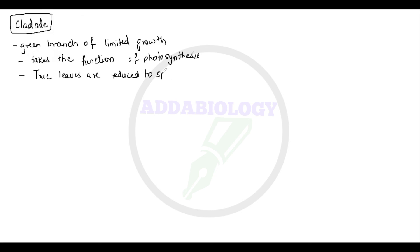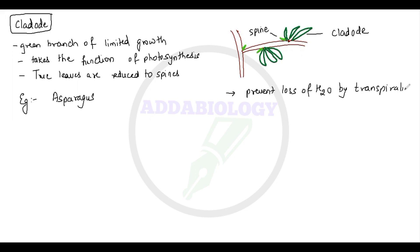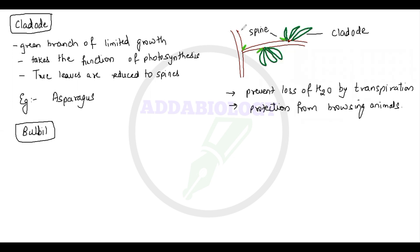In the cladode, the actual true leaves are reduced to spines. The example for cladode is Asparagus. In the diagram, the young stems have taken the function of photosynthesis, and the spines are visible. The role of the cladode is to prevent water loss by transpiration and to give protection from browsing animals.